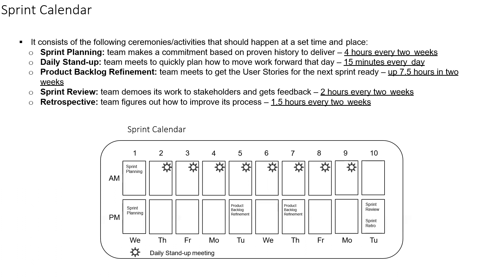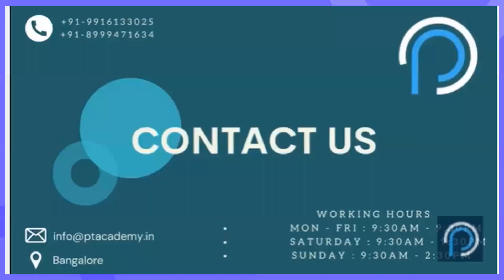So these are the different events that happen in a sprint. This is a standard sprint calendar showing how much time you should ideally take to complete these events. Ultimately, the objective of the sprint is that the planning done on day one should be completed toward the end of the sprint, and then we keep repeating the cycle. Thank you very much for listening — feel free to reach out to us for more.